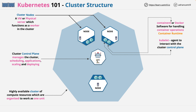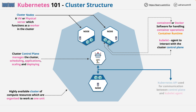Next, we have Kubelet, which is an agent to interact with the cluster control plane. Kubelet, running on each of the nodes, communicates with the cluster control plane using the Kubernetes API. This is the top-level functionality of a Kubernetes cluster — the control plane orchestrates containerized applications which run on nodes.